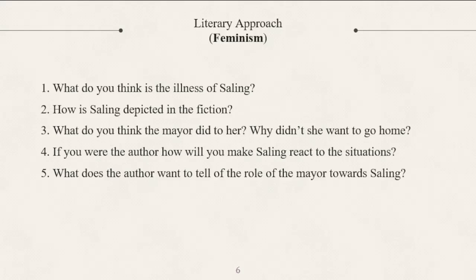Number five: What does the author want to tell of the role of the mayor towards Saling? Doon sa kwento na yun, pinapakita yung role ng kabesa o ng mayor to Saling was to show the gap — yung pagkakaiba o yung agwat ng mayaman sa mahirap — na nagpapakita ng cruelty o cruel abuse of power. That is why doon sa pangyayaring yun, narrape daw si Saling ni Kabeza.